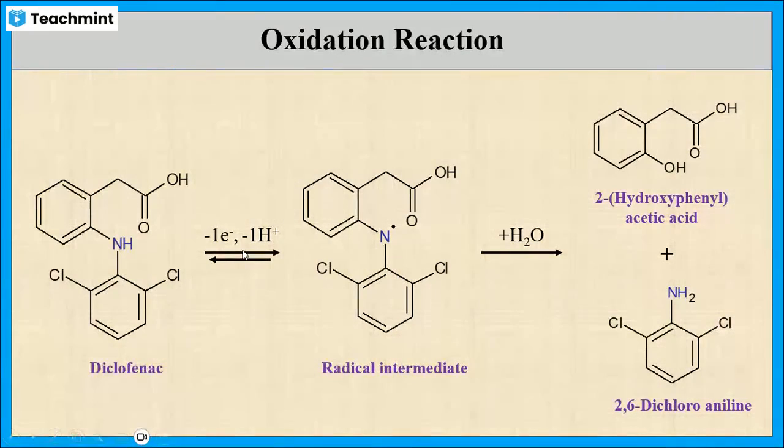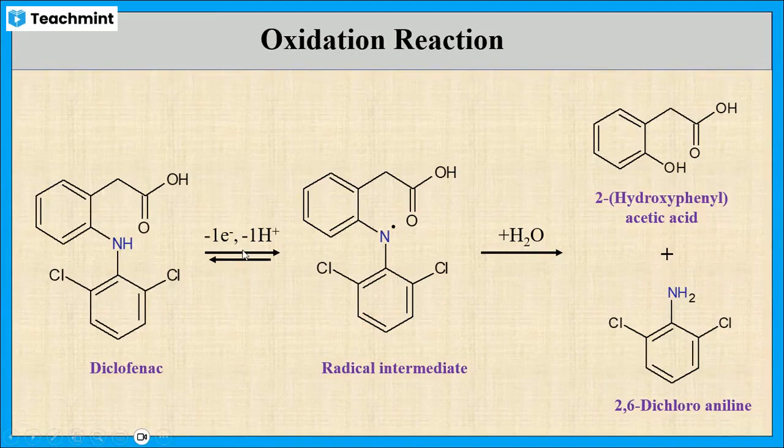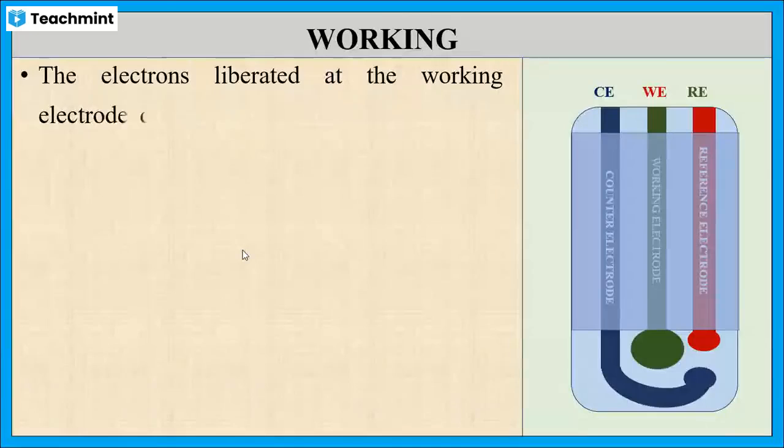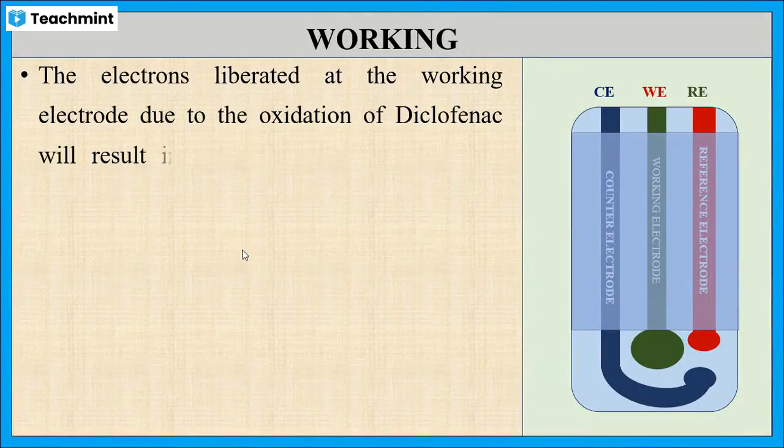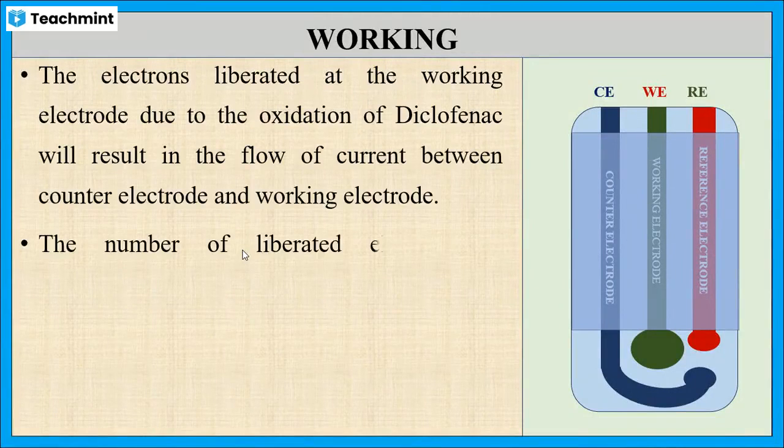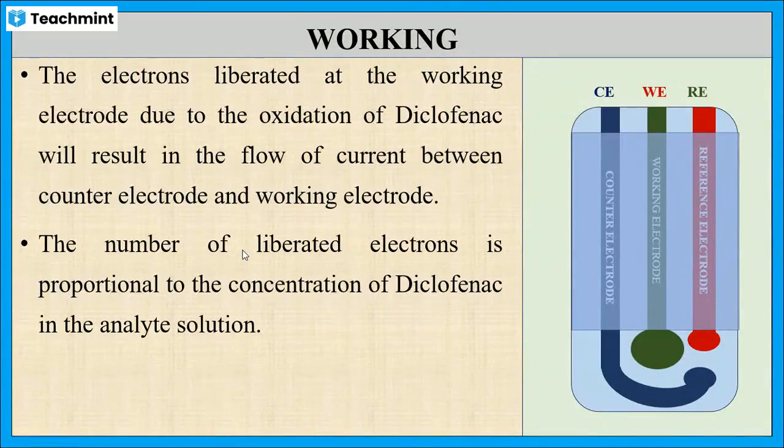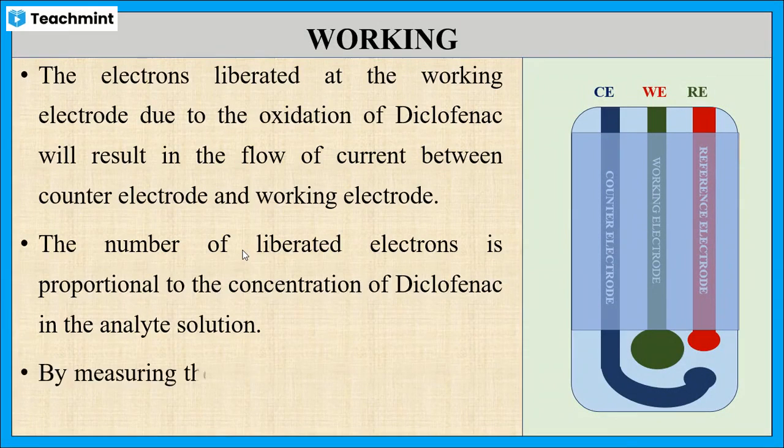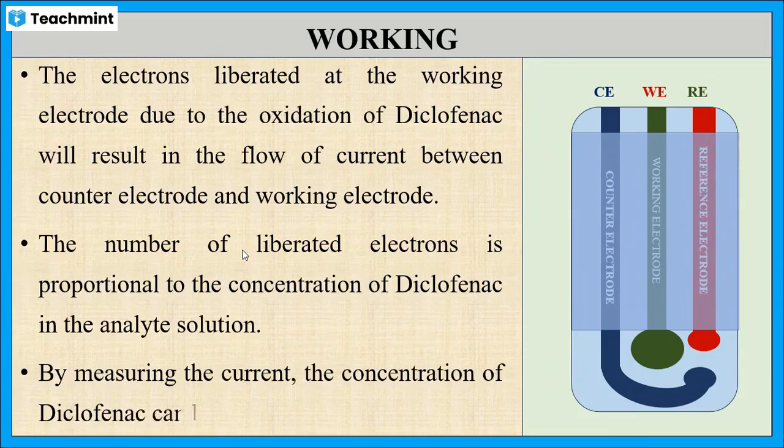The liberated electrons will result in the flow of current between the counter electrode and the working electrode. The number of electrons liberated is directly proportional to the concentration of diclofenac. Hence, concentration of diclofenac can be determined by measuring the current.